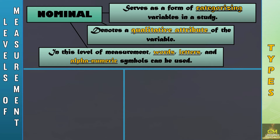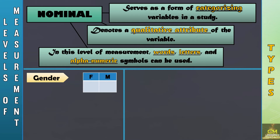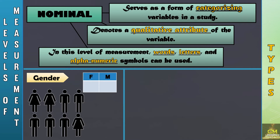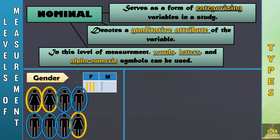Let's have this example. Gender is a qualitative data which can be represented by the letters F for female and M for male. Since this is in the nominal level of measurement, we're simply going to categorize how many respondents are female and how many respondents are male. It is worth noting that in the nominal level of measurement, we could also use words, letters, numbers, and alphanumeric symbols.